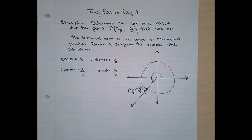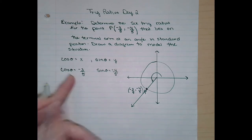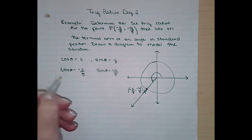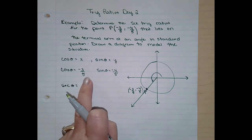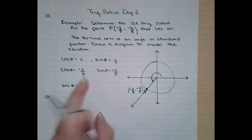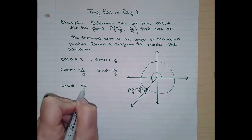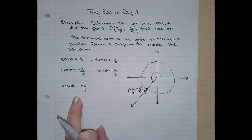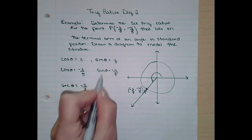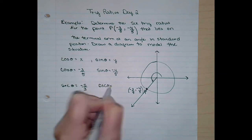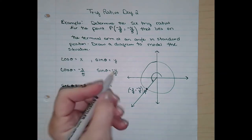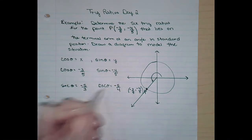You need to remember your reciprocal ratios — which one goes with which. The reciprocal of cosine is secant. So secant of theta is negative five-thirds — just flip the fraction. And the reciprocal of sine is cosecant. It's the reciprocal, meaning flip the fraction; the sine of course stays the same.